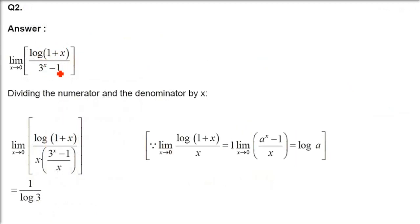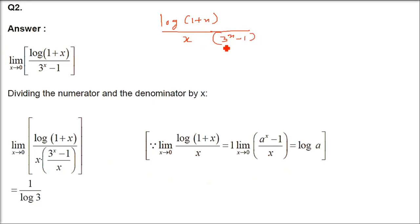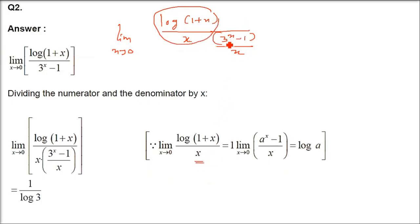Question 2: limit x→0 of log(1+x) divided by (3ˣ - 1). We introduce x in both numerator and denominator. So we write log(1+x)/x divided by (3ˣ - 1)/x. The x's cancel. Applying the limit: log(1+x)/x = 1, and (aˣ - 1)/x = log a, so (3ˣ - 1)/x = log 3. The answer is 1/log 3.